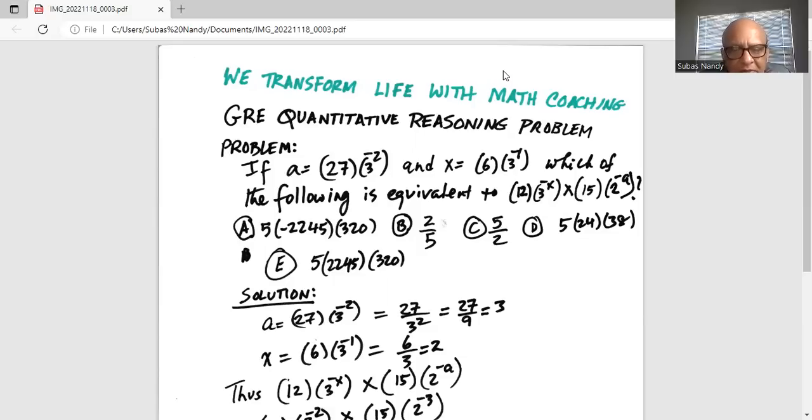Similarly, x is 6 multiplied by 3 exponent minus 1, or bringing the minus 1 exponent to the denominator, we get 6 divided by 3, which is 2.